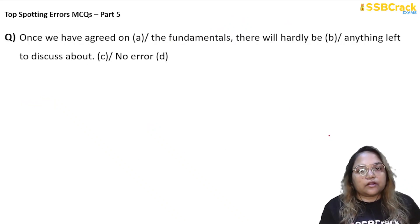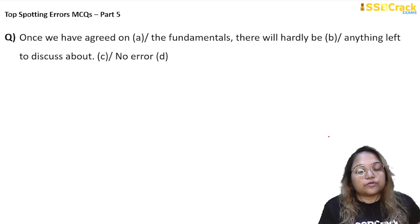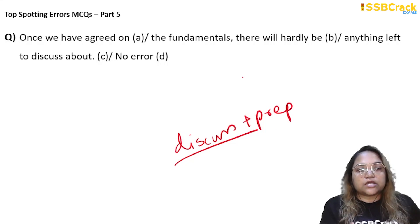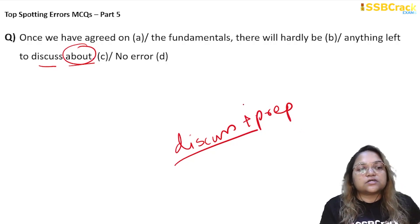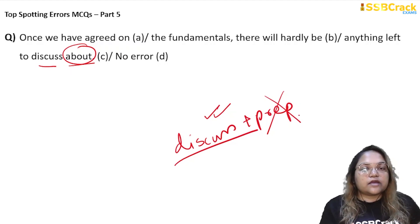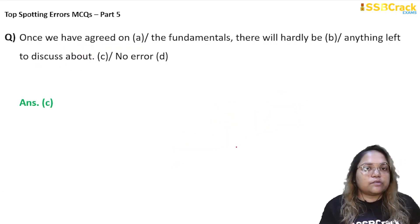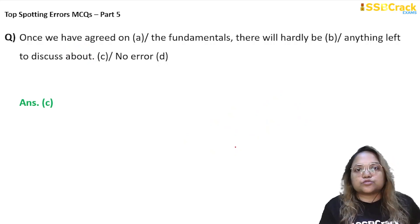Next question: 'Once we have agreed on the fundamentals, there will hardly be anything left to discuss about.' Again, the sentence may seem correct, but there is definitely an error — a very small but very important one that candidates can easily miss. The word 'discuss' is a self-sufficient word; it does not need any preposition after it. So it is sufficient to say 'anything left to discuss' — you will not use any preposition like of, about, or on after it. So option C is the right answer. Part C had this mistake, which is very important and many students miss it in competitive exams.